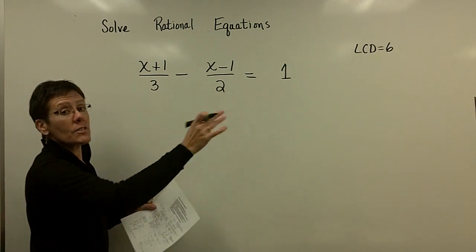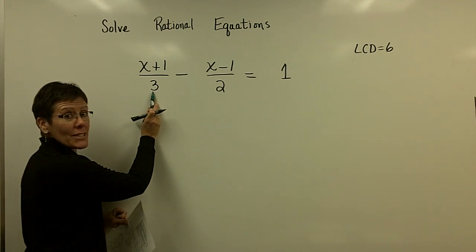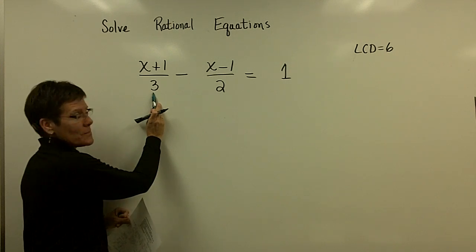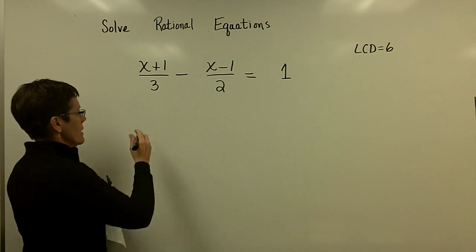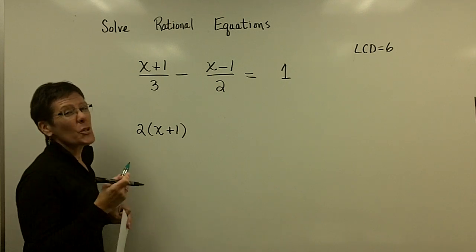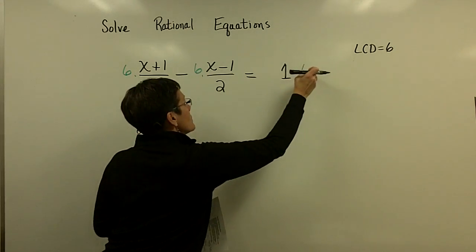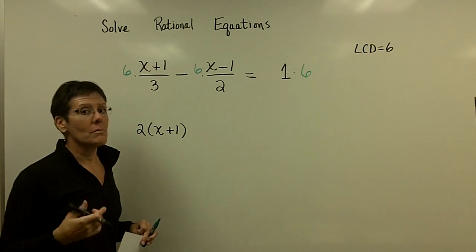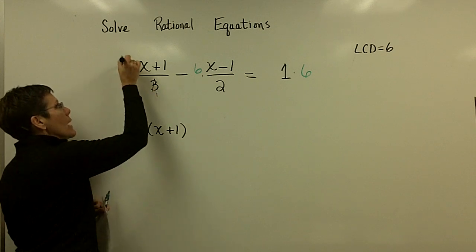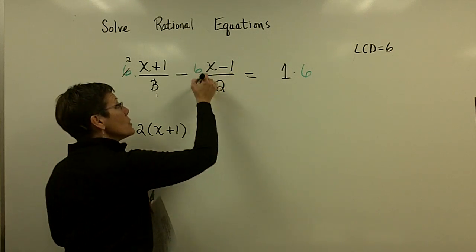So, every one of these terms has to be multiplied by 6. However, this one, this denominator has a 3. So, of the LCD, which piece is it missing? The 2. So, ultimately that numerator is going to be multiplied by a 2 and the denominators will be gone. You would multiply this by 6. You would multiply that by 6. You've kept the balance in the equation. And so here, because the 3 was in the denominator, it becomes a 1 and you're left with 2 times that x plus 1.